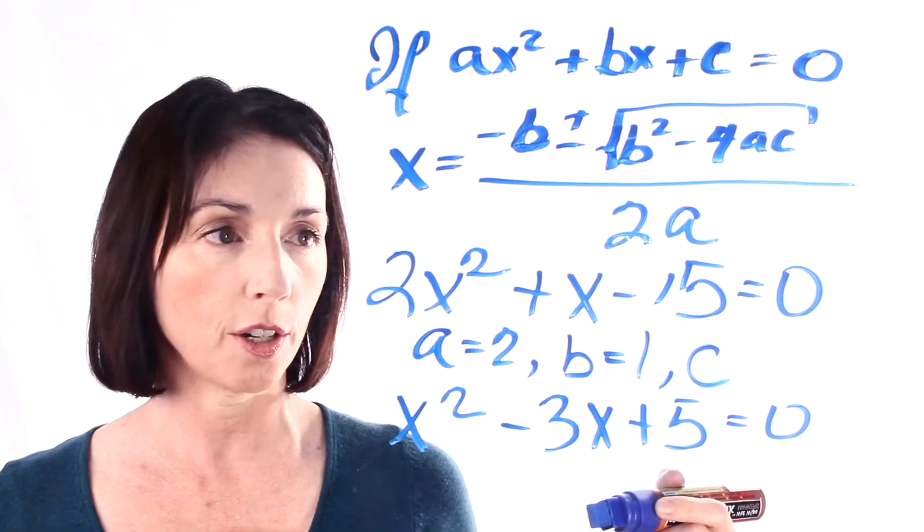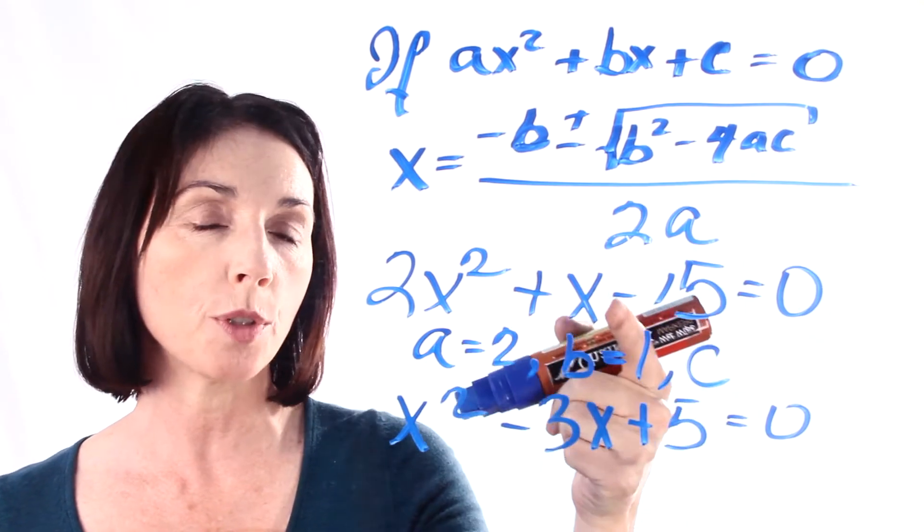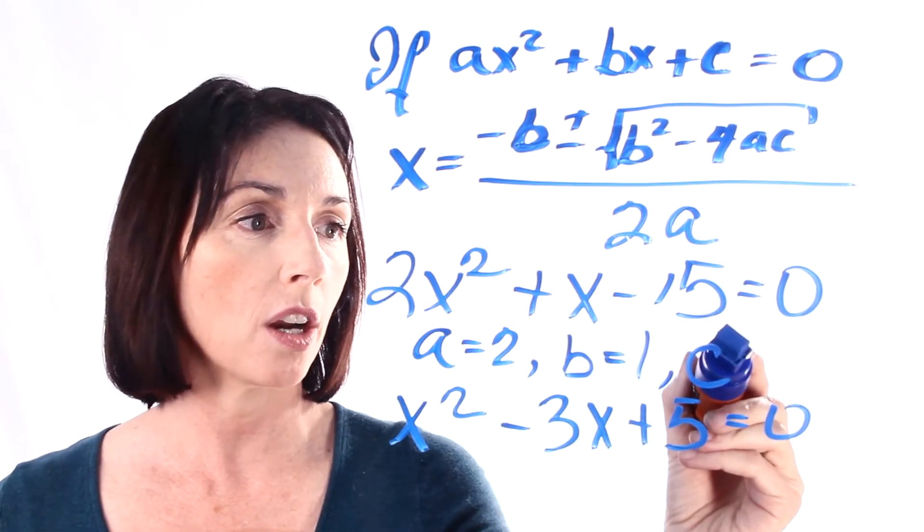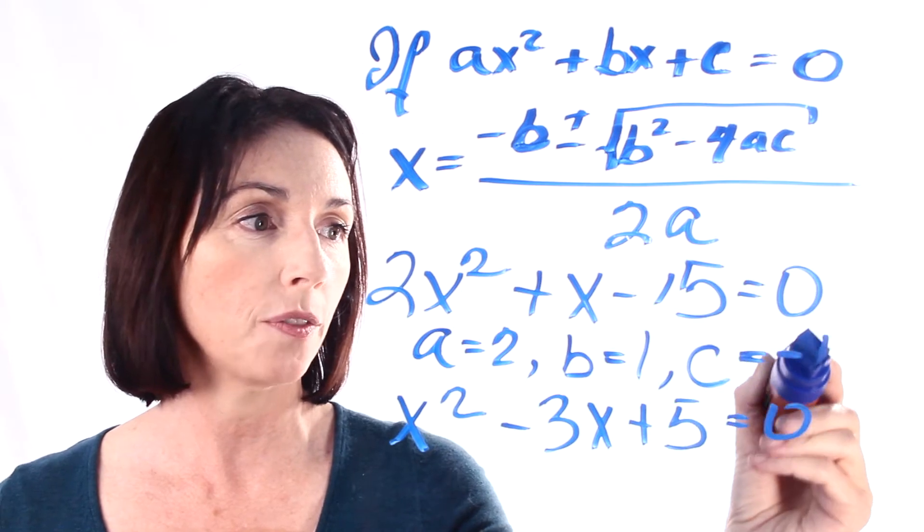c is the constant term. And in this case, we're subtracting 15. That means our constant term is negative 15.